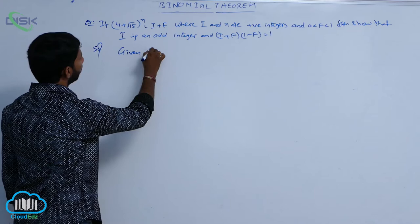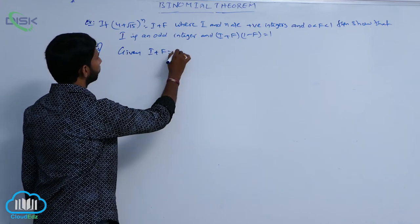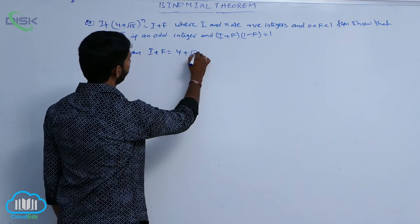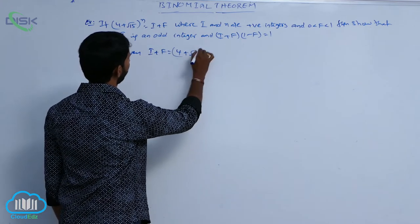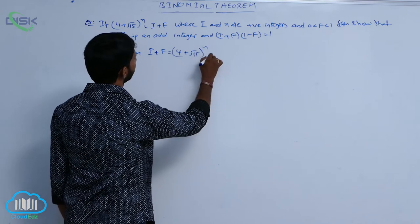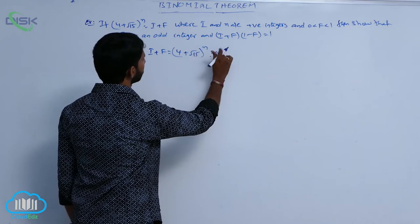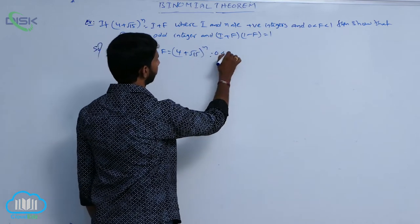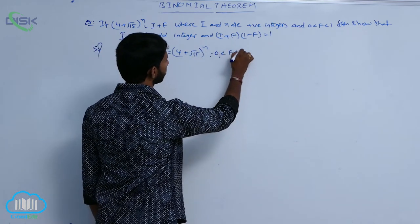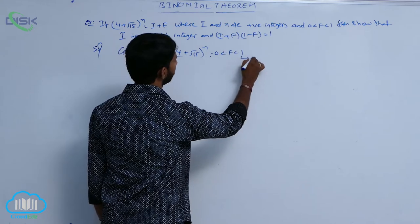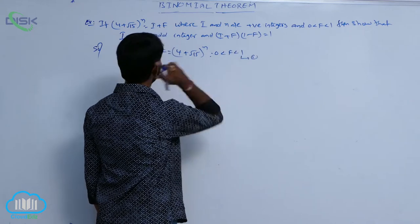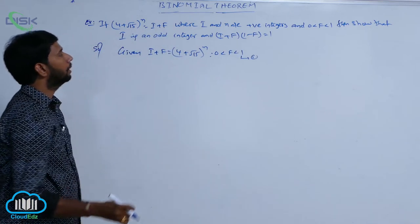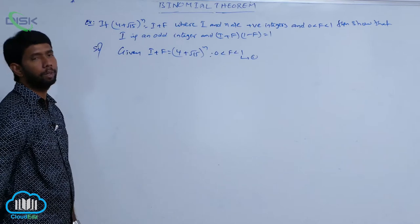Given: i + f = (4 + √15)^n, with the condition 0 < f < 1. That is condition number 1.